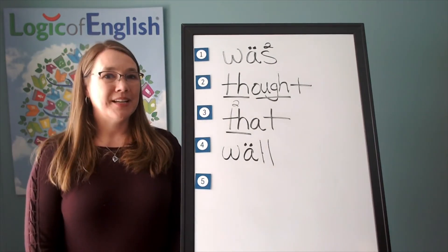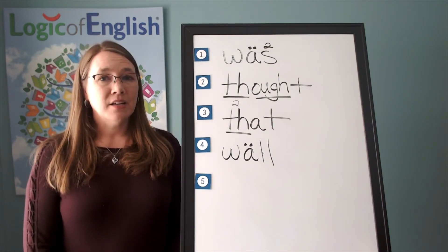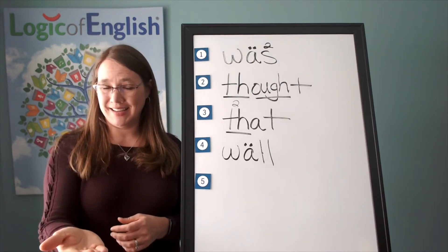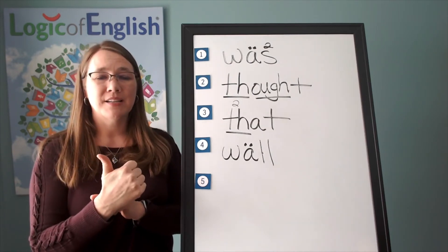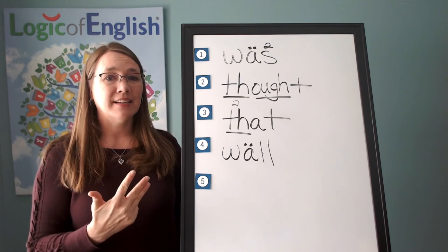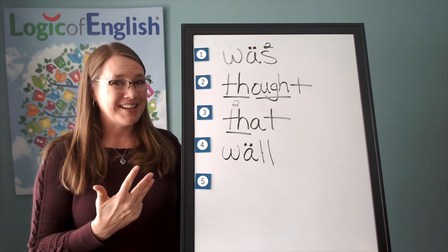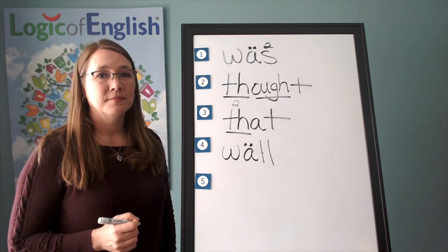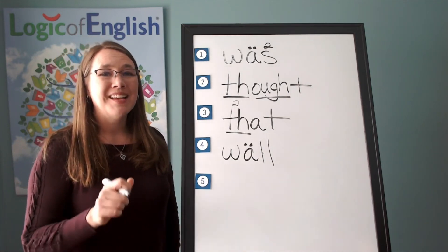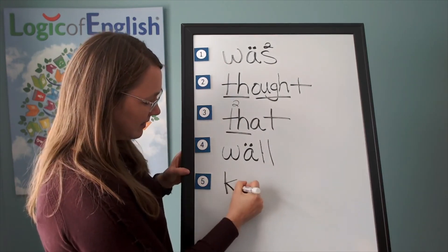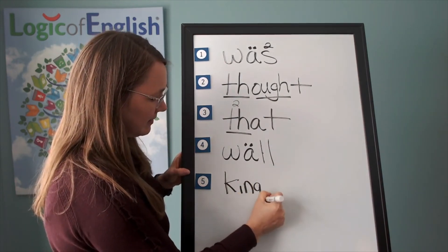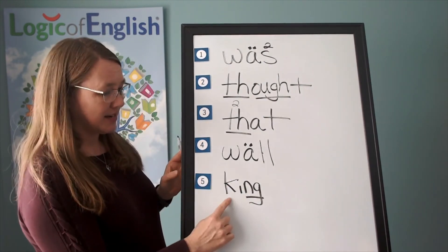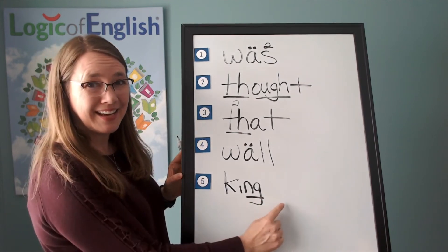The last word is 'king.' The king has a crown on his head. Go ahead and say 'king.' Let's sound it out: K — this is a tall K — I, N. Go ahead and sound it out as you write it: K, I, N — 'king.' Now help me write it: K, I, N. And how will we mark it? Underline the N. Let's sound it out together: K, I, N — 'king.'